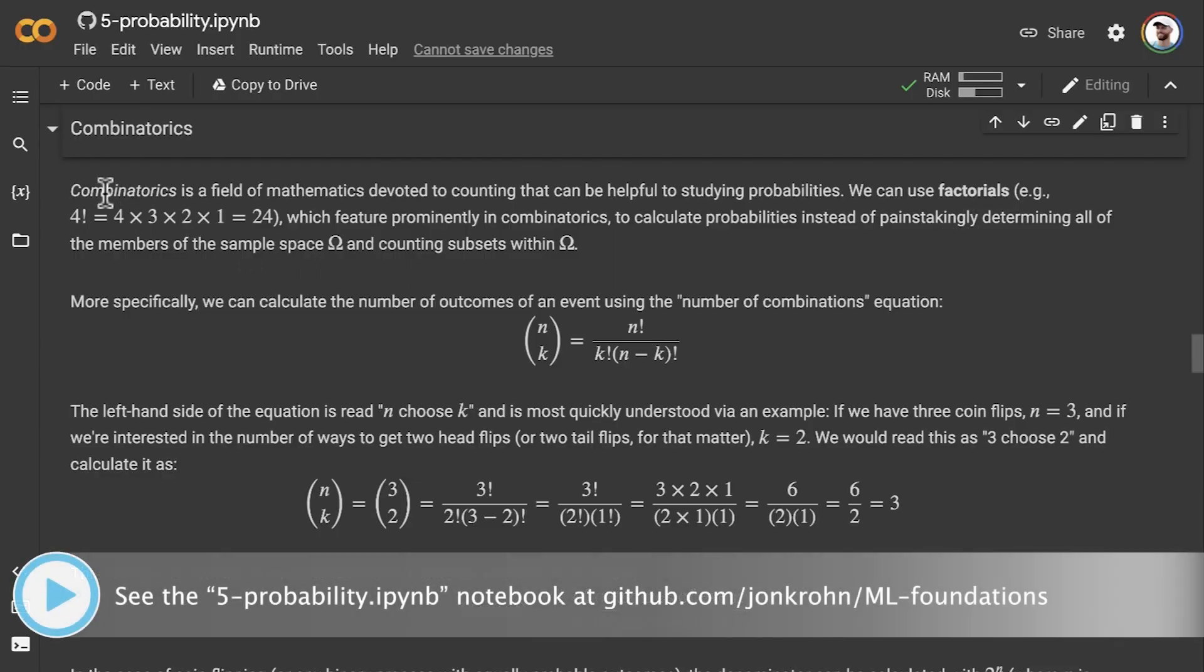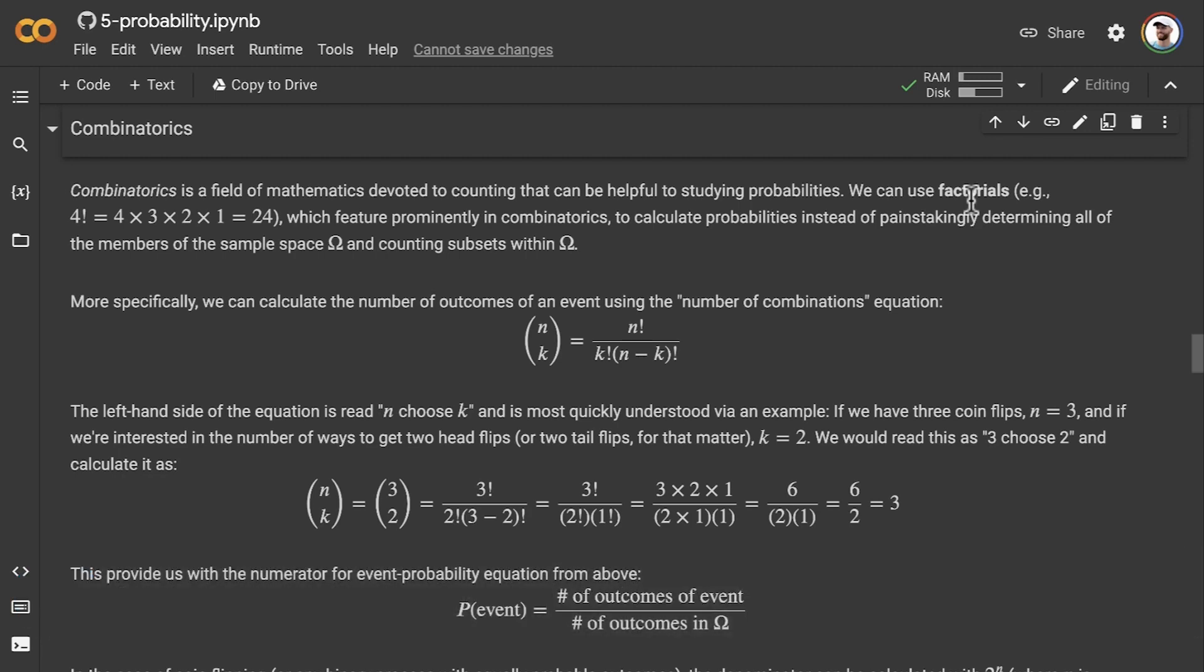As I just mentioned, combinatorics is a field of math devoted to counting that can be helpful to studying probabilities. In it, we use a lot of factorials, and if you're not familiar with those, they're pretty simple. We use an exclamation mark to indicate factorials, so 4 factorial is equal to 4 × 3 × 2 × 1, which is equal to 24.